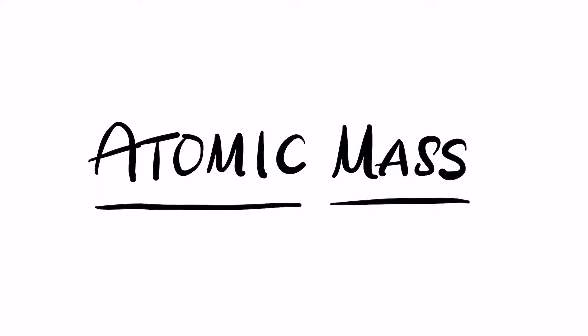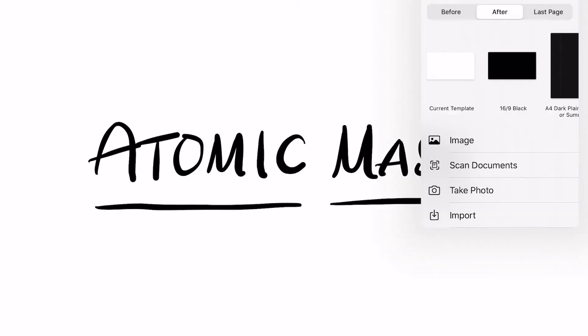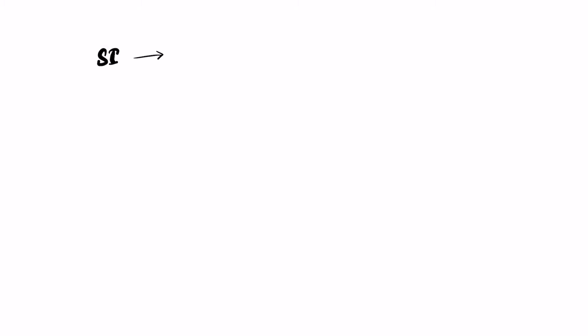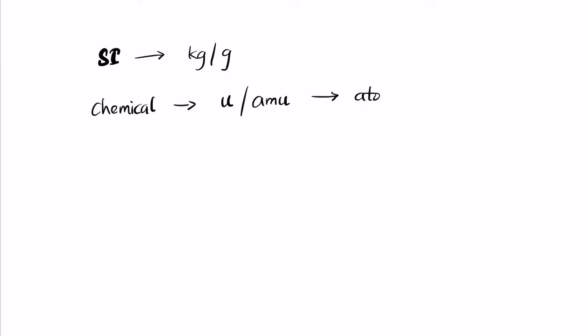Let's continue our lecture on isotopes and talk about atomic mass — how do you calculate the atomic mass of a given substance. In general, we calculate by two measures. The common measure used in the SI system is the kilogram or gram, but in chemistry we use a unit called U or AMU, which represents atomic mass unit.